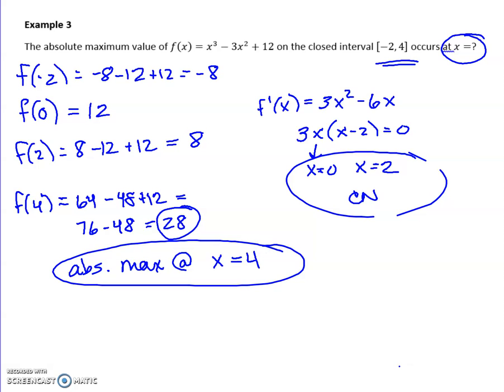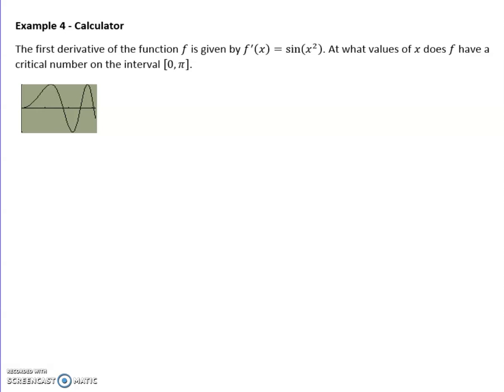All right. We have one last little one to look at, and that involves the calculator. So let's take a look at this. I even reminded you you could use your calculator here. So the first derivative of f is given, and so they've given you that function. This is the derivative. They want to know the values at which x has a critical number from 0 to π. Well, you should know to get a critical number, the derivative needs to be 0. So I'm looking for when this function is 0.